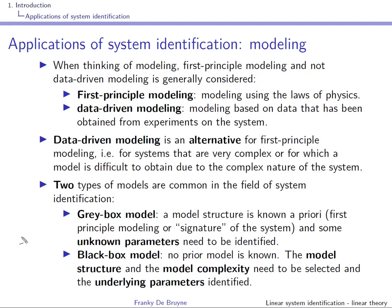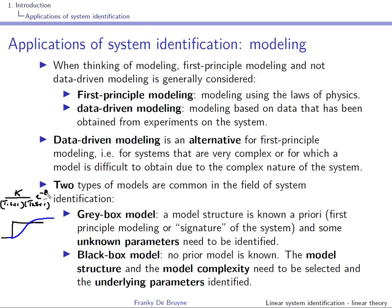Typically in gray box modeling you do a step response on the system and look at the output. When you look at the step response, you recognize the signature — for instance, a slope of zero at the start suggests a second-order system with a slight delay. You then use a model structure with two time constants and a delay, which is called a van der Grinten system.